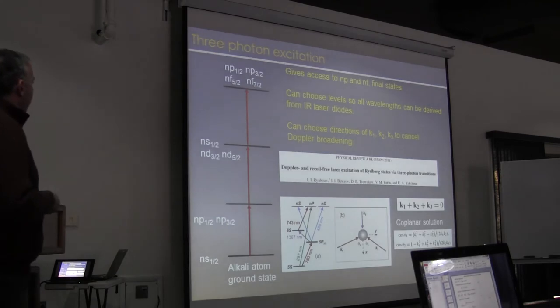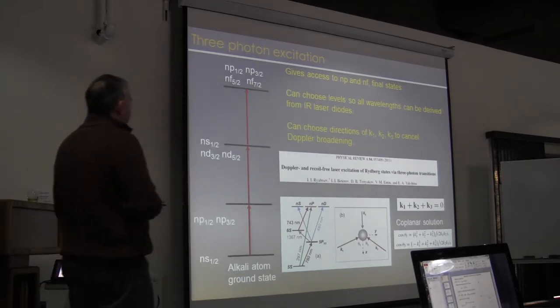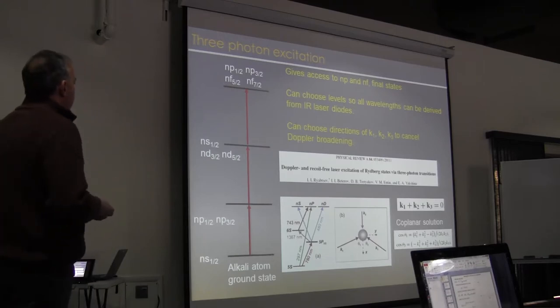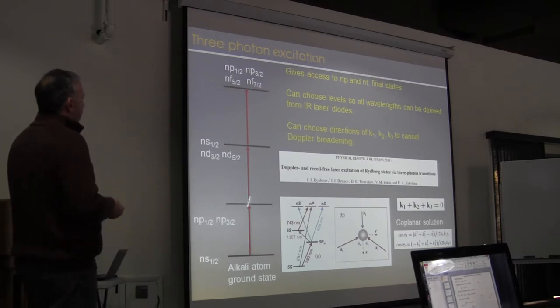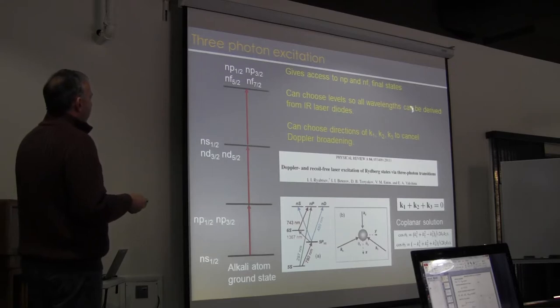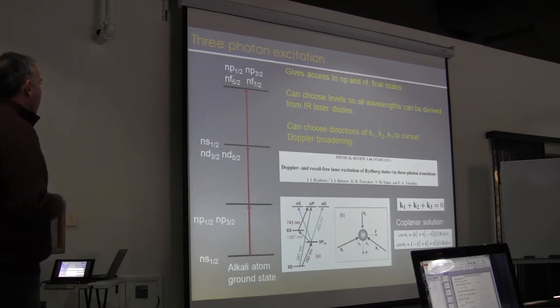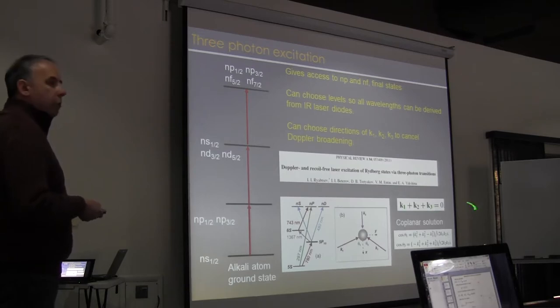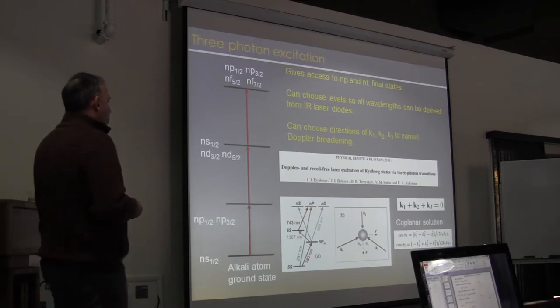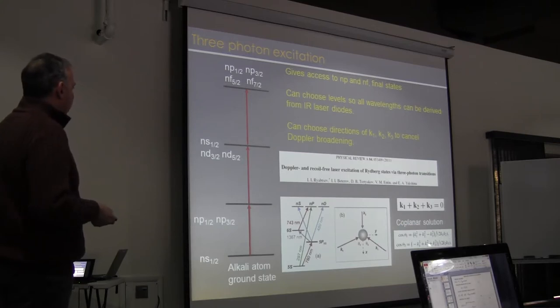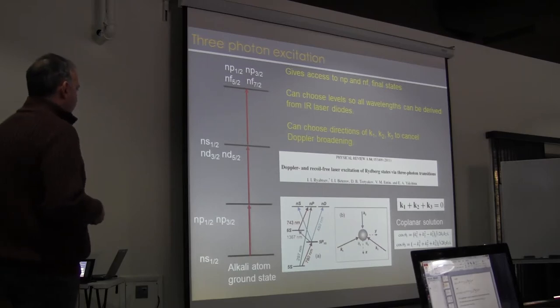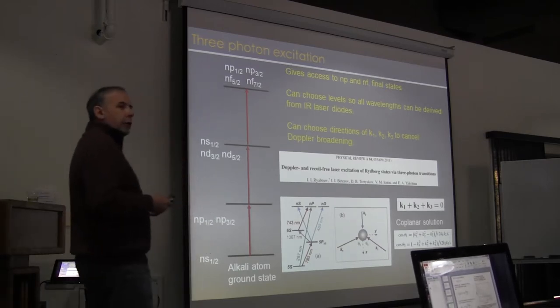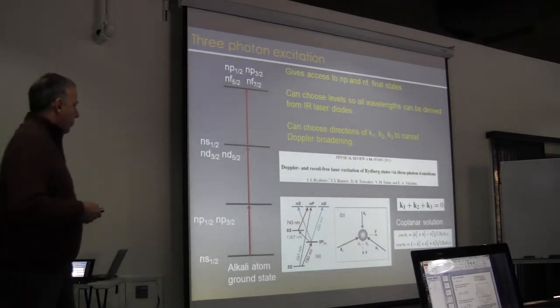You can also use three-photon methods to access other levels, and three-photon excitation has also the nice feature that you can cancel Doppler shifts using the different directions of the three-photons. And you can also choose levels with the additional flexibility of having three-photons, such that they're all in the infrared, so you can drive them from IR laser diodes, which simplified some of the laser setup. So there's a nice paper from the Löw group from a couple of years ago, which shows that if you take a three-photon excitation, consider K1 plus K2 plus K3 equal to zero, that would cancel the Doppler effect, and there are coplanar solutions. So there's some examples here, particular geometry, with all three beams in the plane, which will give you Doppler-free excitation. And so that would allow you to go outside the cold atom regime and actually get Doppler-free excitation, for example, in vapor cells.